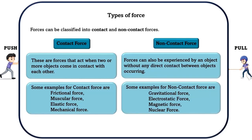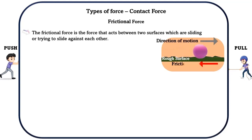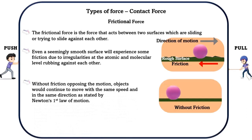Let us see these examples of forces in detail. Frictional force is a force that acts between two surfaces which are sliding or trying to slide against each other. Even a seemingly smooth surface will experience some friction due to irregularities at the atomic and molecular level rubbing against each other. Without friction opposing the motion, objects would continue to move with the same speed and in the same direction as stated by Newton's first law of motion. From simple things like walking to complex systems like the brakes on an automobile, most of our daily actions are possible only due to the existence of friction.